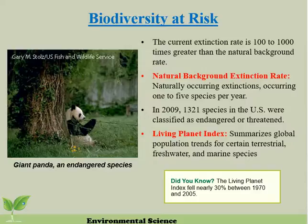This first section is talking about biodiversity at risk, and really the majority of it is talking about extinction. What's the current extinction rate versus the natural background extinction rate? The current extinction rate is 100 to 1,000 times greater, and the natural background extinction rate is about 1 to 5 species per year. Most scientists attribute the current extinction rate being so much higher to human activity, and really all six of the ways in which biodiversity is lost are tied to humans.